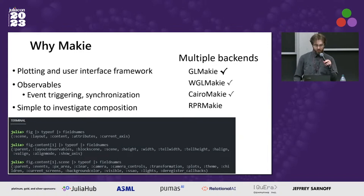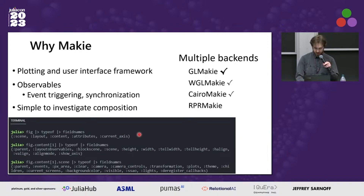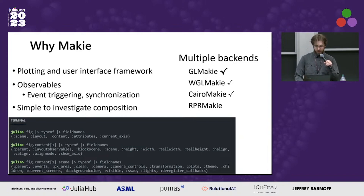Makie types are also easy to look inside and investigate. I use this handy fieldnames pipeline to see what types are made of, and I go recursively through things to get a good idea of how they're laid out. There are also multiple backends — GLMakie has by far the most work done and opens a separate window for display. There's some support for others, but that's expected to grow over time.